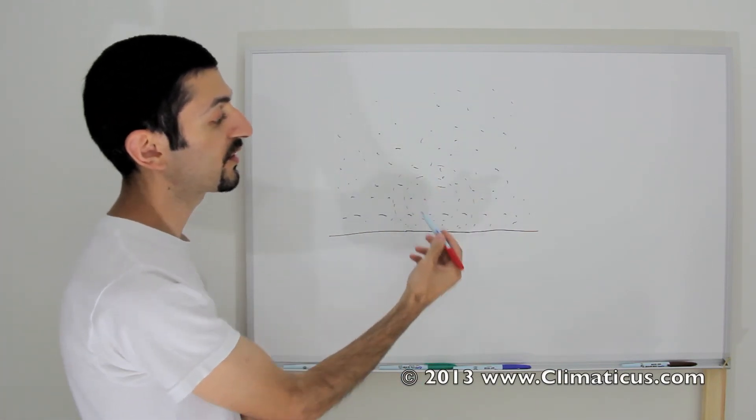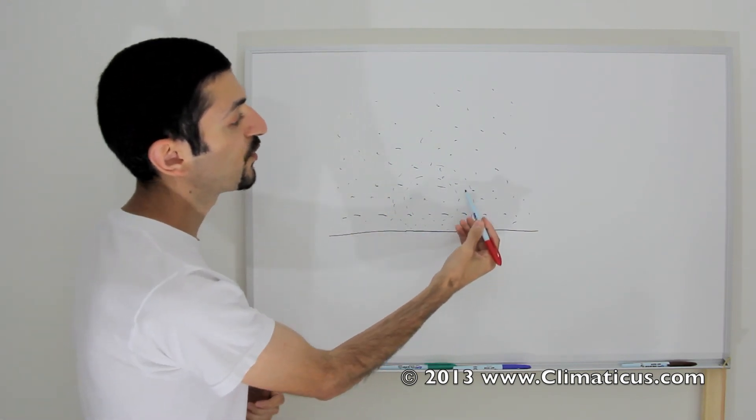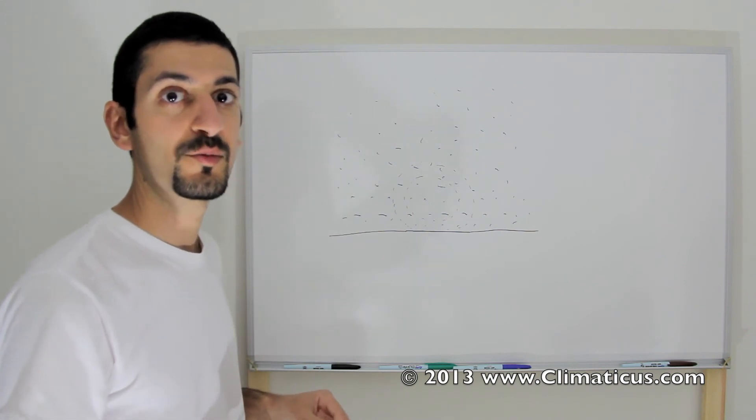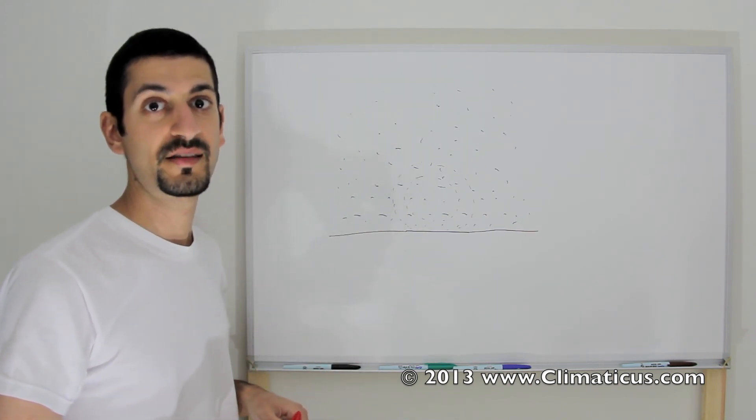Consequently, this parcel becomes less dense than the surrounding air and it will want to rise until it reaches a point at which it's reached equilibrium and buoyancy. And that is how hot air rises.